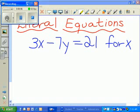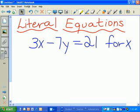Literal equations are equations where you have more than one variable, so you can't get a numeric answer, and you're asked to solve for a specified variable. In this literal equation, 3x minus 7y equals 21, you have to solve for a specific variable, which in this case is x.